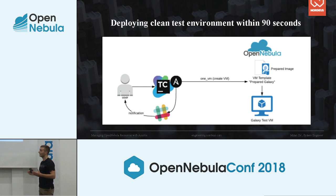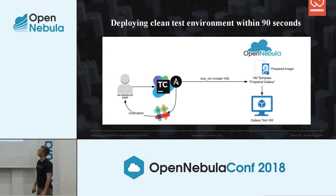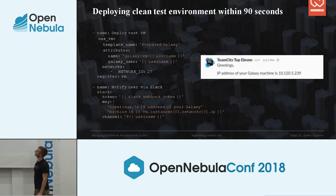Once virtual machine deployment has finished, the developer who started the build will be notified via Slack, so they can easily plan their next steps without losing time. TeamCity first deploys a test virtual machine from a template called PrepareGalaxy, then notifies the user via Slack, and the developer will get a message like this.